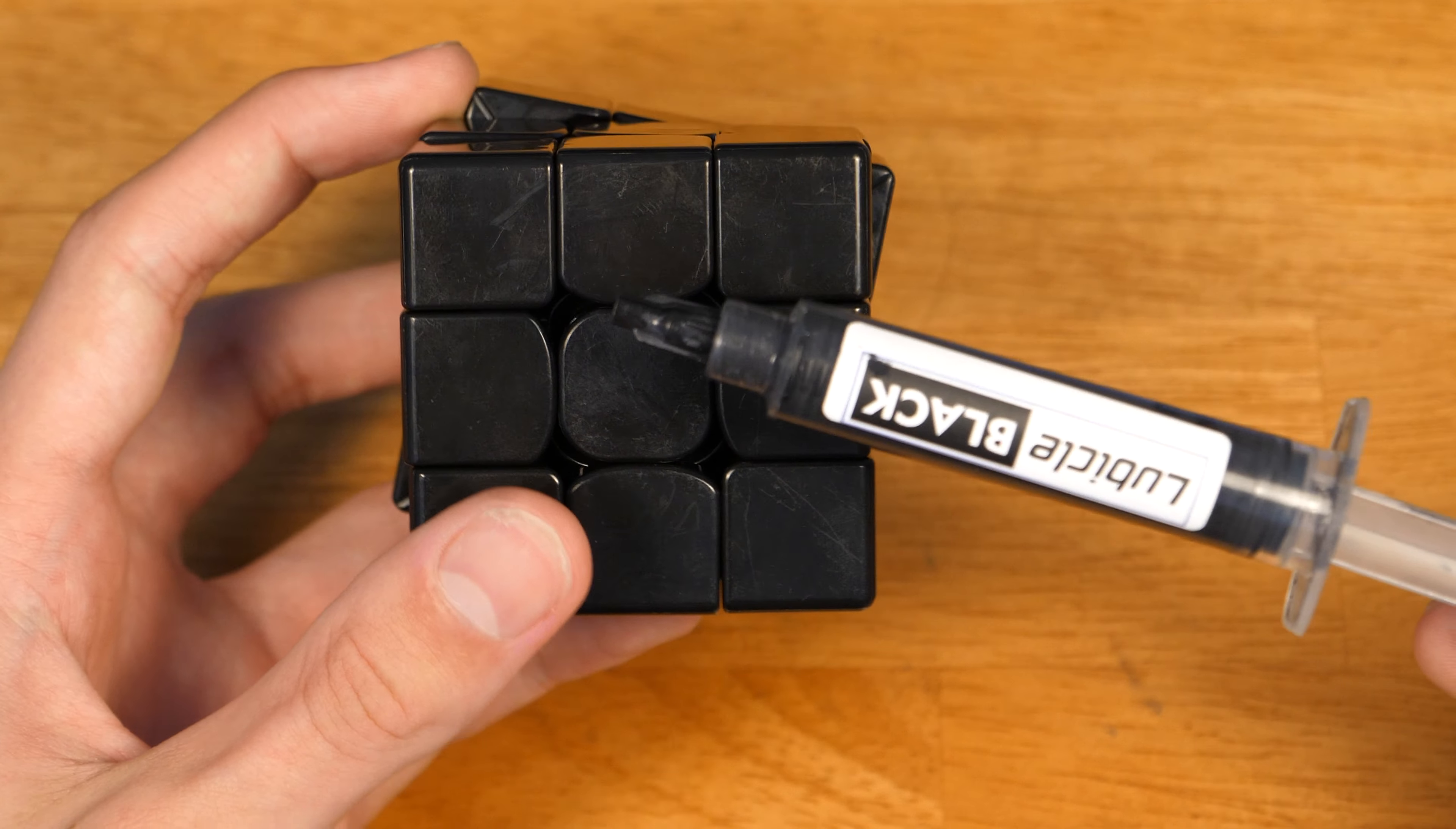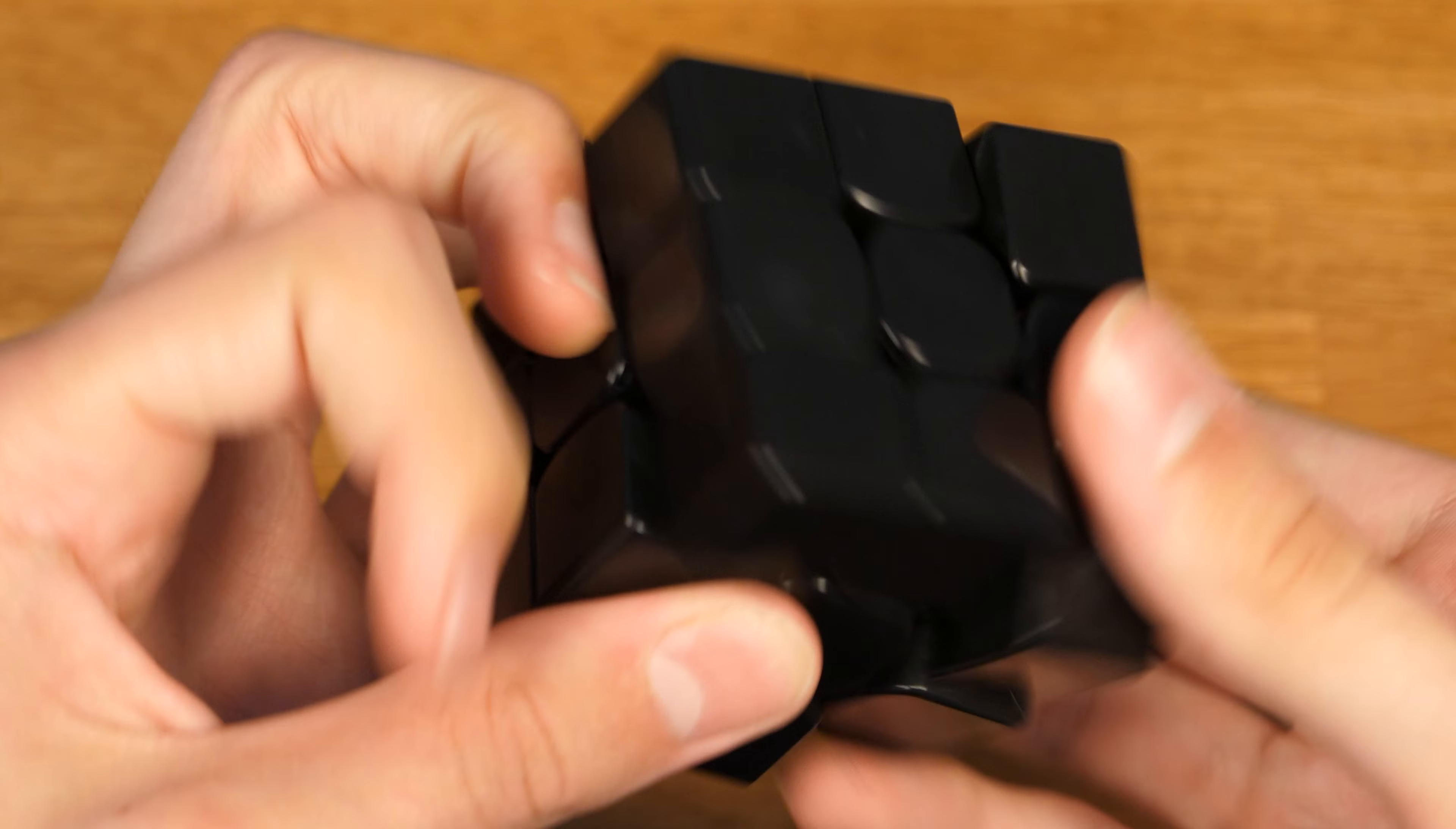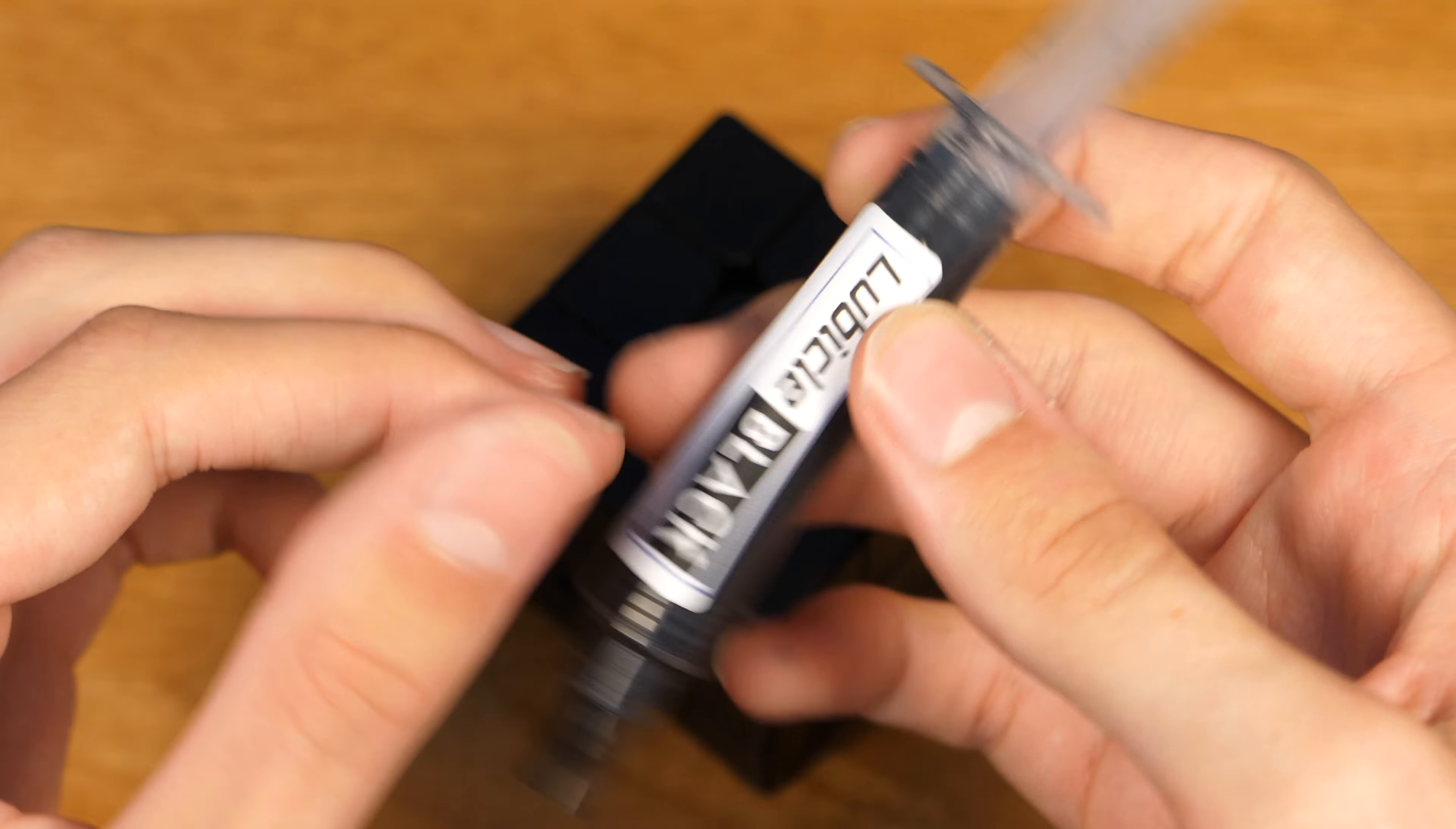So I'm going to have to put it in my main and see how it works out. So that's about it for my first impressions on Lubicle Black. This is insane. This test cube they sent me, I put some Lubicle Black in here. And it's just magical. It's just incredible how fast this cube becomes. Just adding a little bit of Lubicle Black into the core. And this is amazing, guys.